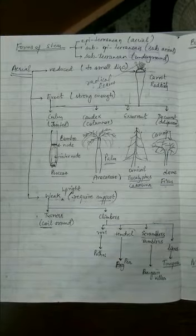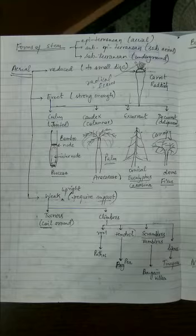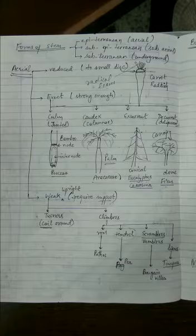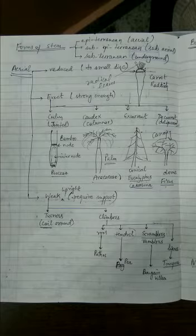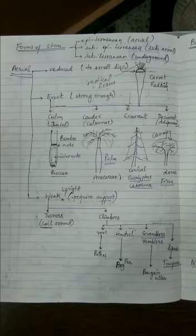Twiners have long, flexible, sensitive stems. They perform thigmotropism — they are able to touch and feel where the support is and start moving around it, coiling around the support. Examples include Ipomoea palmata, also called railway creeper, and Clitoria, a butterfly pea plant with blue-colored flowers.